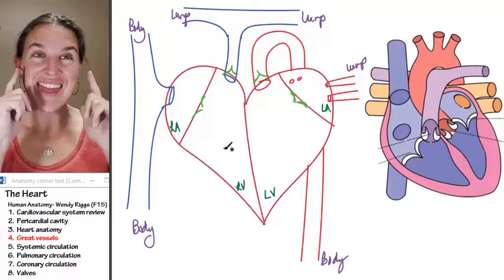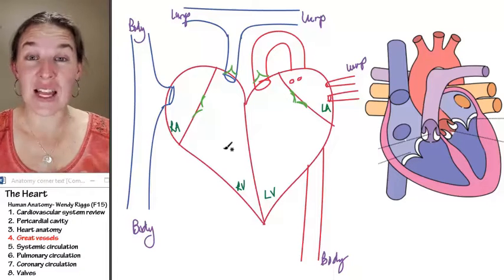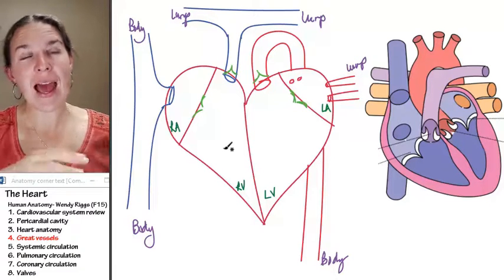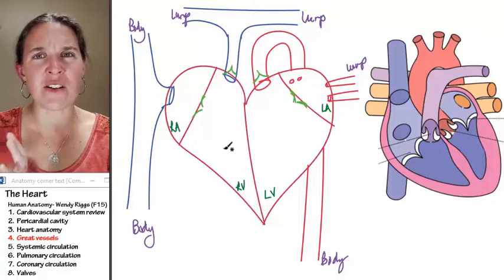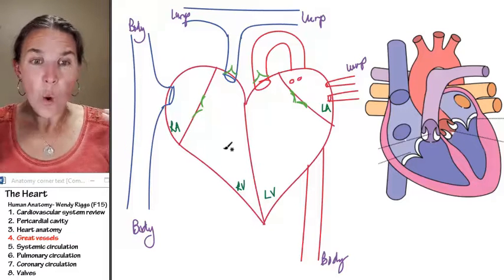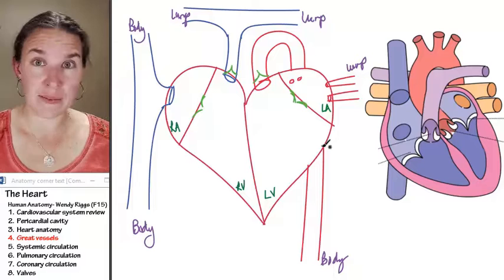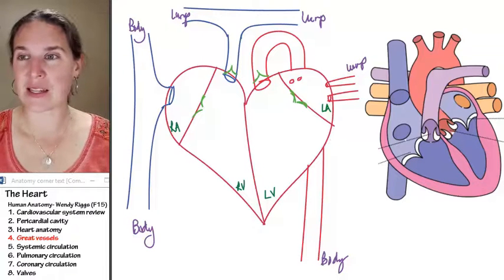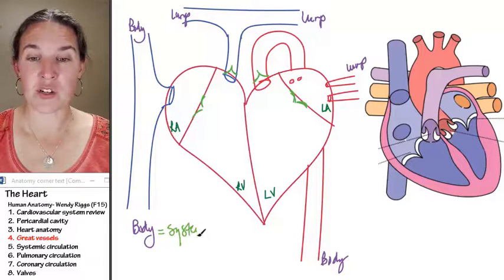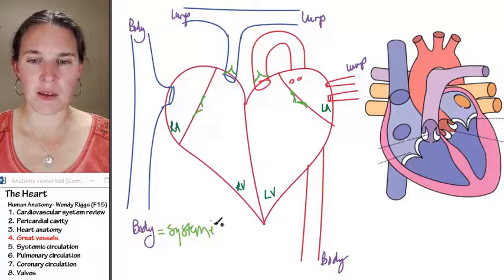So we're going to start thinking through the great vessels that are involved in the systemic circulation as opposed to the great vessels that are involved in pulmonary circulation. And what I want you to think about is, if we're associated with body, that's systemic. That's part of the systemic circulation, circulatory system, systemic.